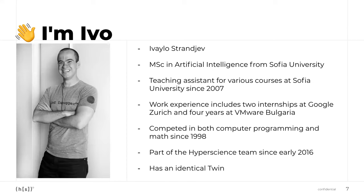Now, the most boring topic — who I am. I'm Ivo, or Ivo Strangev is my full name. I graduated with a master's in artificial intelligence from Sofia University about nine years ago. I've been a teaching assistant there occasionally since 2007. I completed two internships at Google. Before joining Hyperscience, I worked four years at VMware Bulgaria. I've been part of Hyperscience for more than five years, since February 2016. Important disclaimer: I have an identical twin, so if you see me on the streets of Sofia and I don't say hi, it's probably not me.